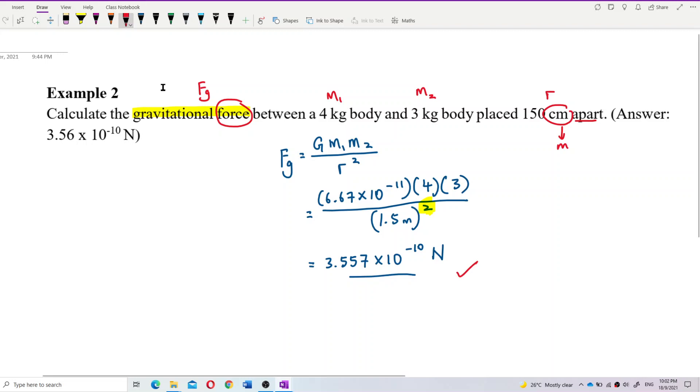That is how we do it. GmM over R square because we have two masses. The force between them is GmM over R square. That's all.